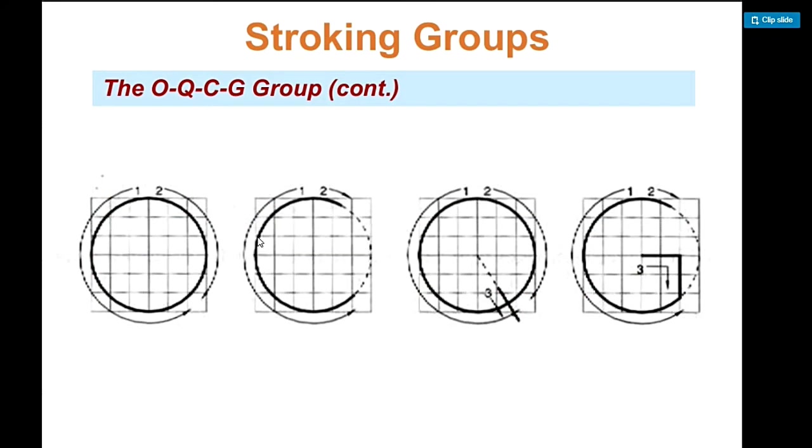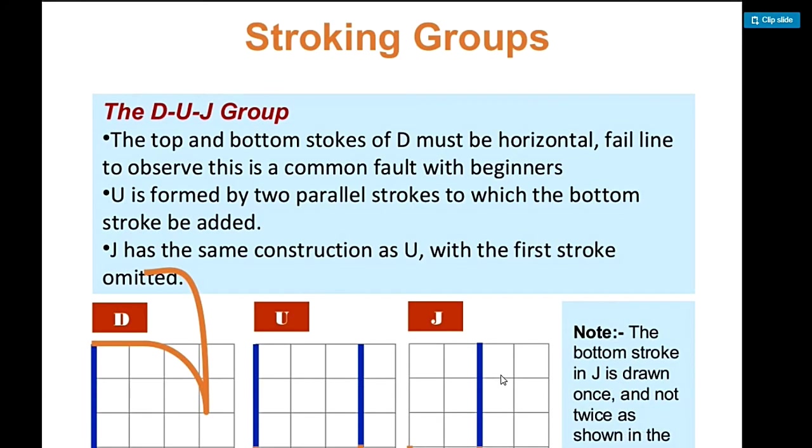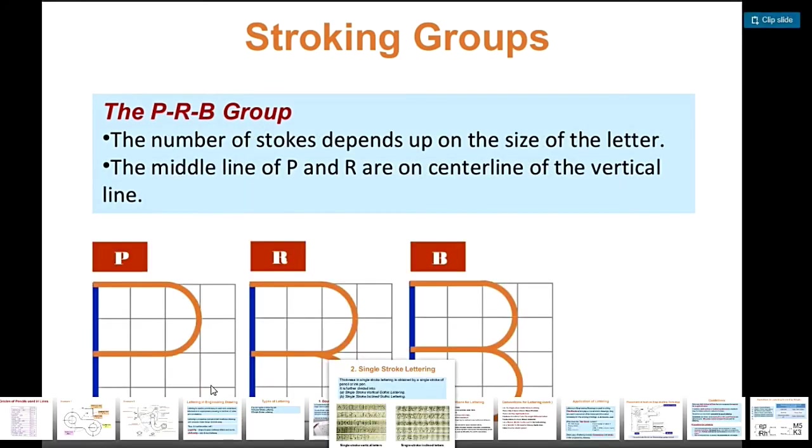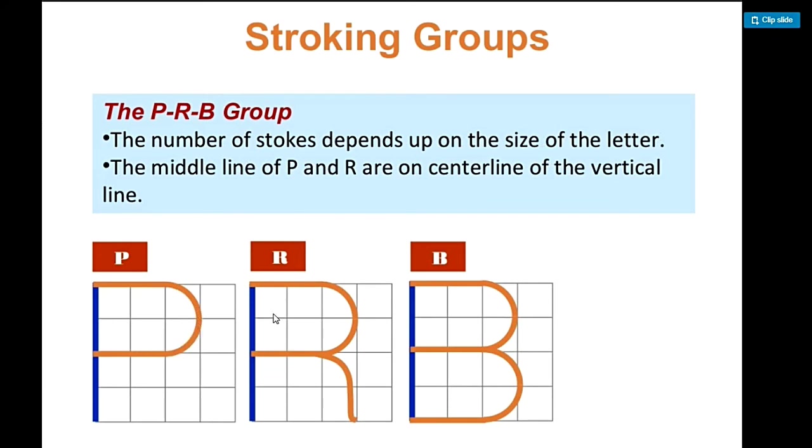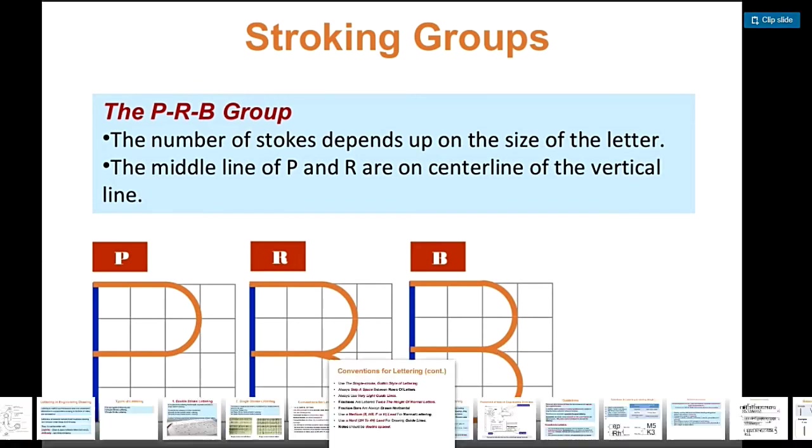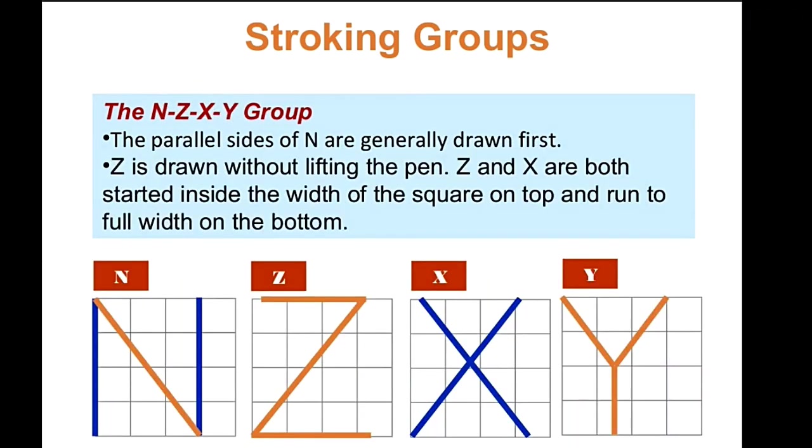This was made without using a compass. This is freehand making circles. The letter O and letter Q are freehand. Like here, the P, this curve here and here, that is freehand lettering, not using a ruler. This straight side here and this are freehand.